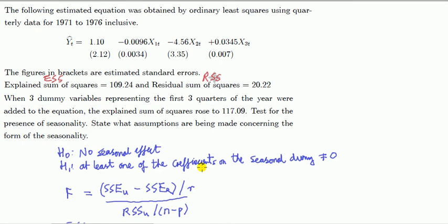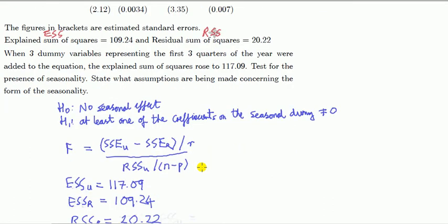Then the F-test formula, the useful one here given the information, is this. Remember there are different forms, but here we are given explained sum of squares, so I've used explained sum of squares rather than residual sum of squares, although I could do that as well.